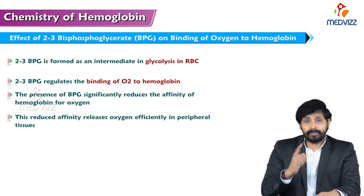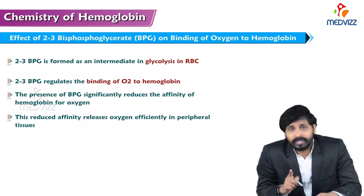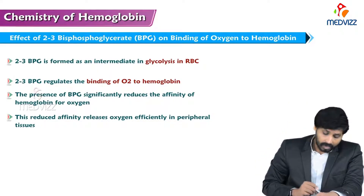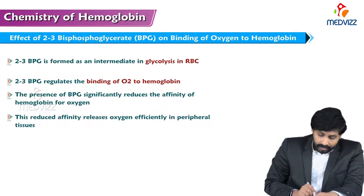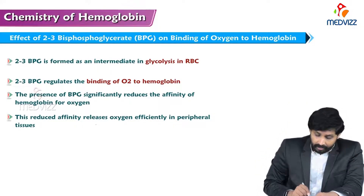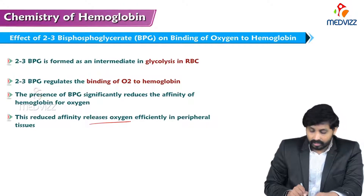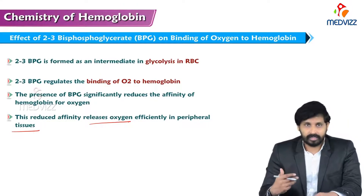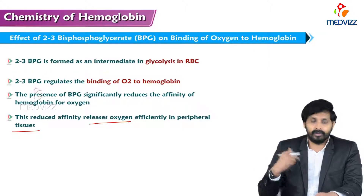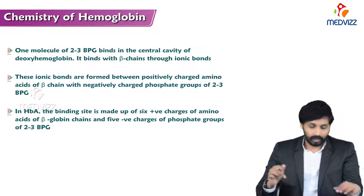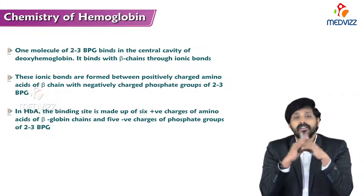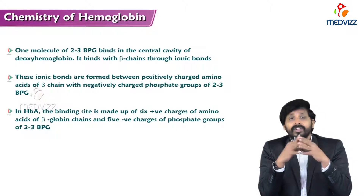The presence of 2,3-BPG significantly reduces the affinity of hemoglobin for oxygen, and this reduced affinity releases oxygen efficiently in peripheral tissues — meaning unloading of oxygen at tissue level. One molecule of 2,3-BPG binds in the central cavity of deoxyhemoglobin.